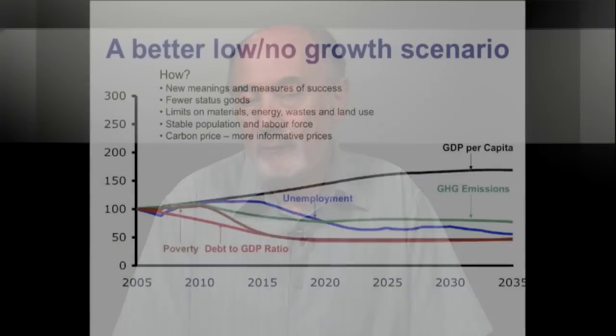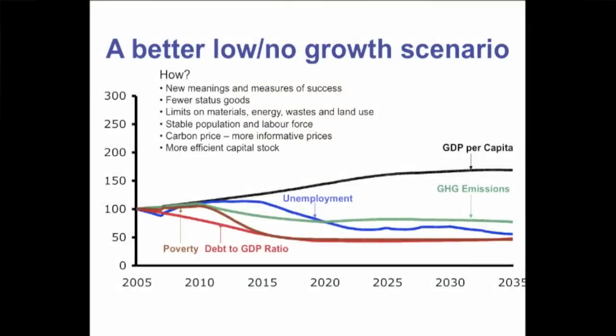We definitely need more efficient capital — better equipment in industry, in our homes, in the cars we drive — which would partly result from more informative prices. We can still benefit from improvements in productivity and better technology, but the way I think we should benefit is to work less, have more leisure, more time with our families and communities, doing our hobbies and so on. I think that's all part of meeting those new measures of success.